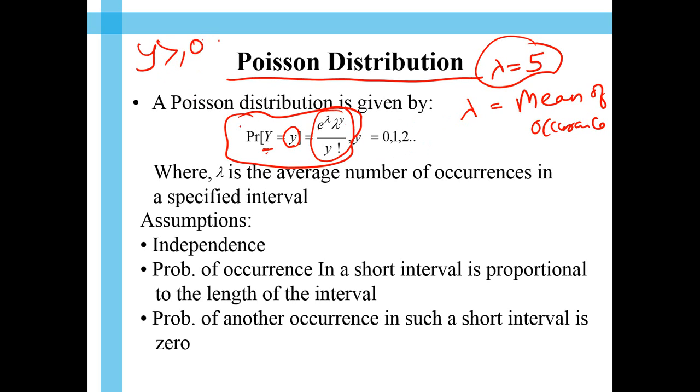And you'll never have a negative number. Because Y, the random variable, capital Y, actually represents the count of something. A count of something cannot be negative. Isn't it? We cannot have negative numbers for count.